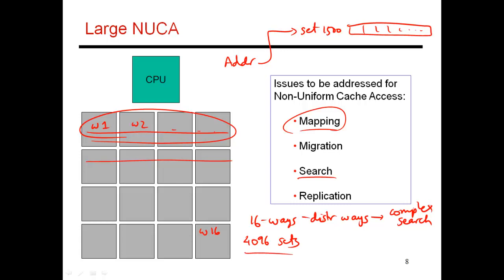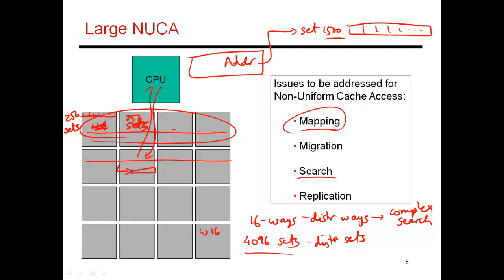On the other hand, if I distribute the sets — say the first 256 sets are placed in the first bank with all 16 ways — then the next 256 sets go to the next bank, and so on. Now if I know my data is in set 1,500, I know it's going to be in the sixth bank. I send my request directly to that bank, look up set 1,500 across all 16 ways, find the data, and return it. So the latency is a function of which set your data belongs to — essentially what address the data has been found at.